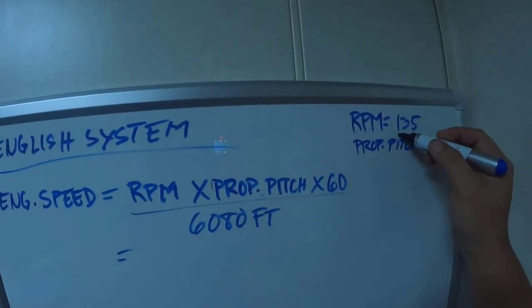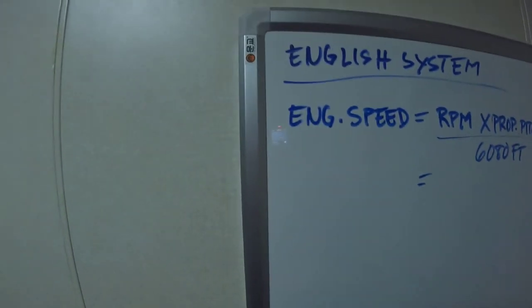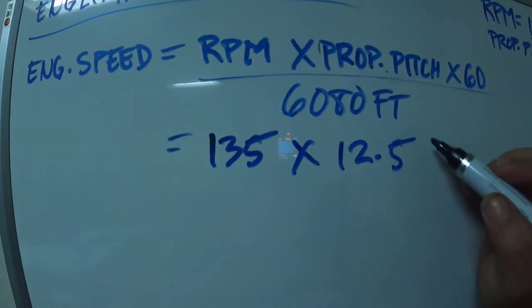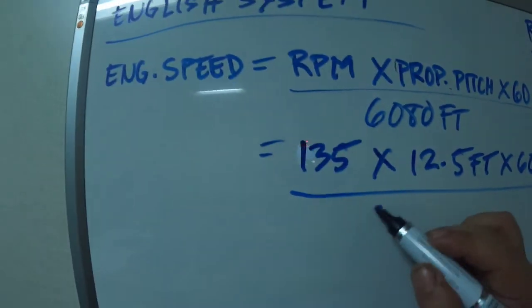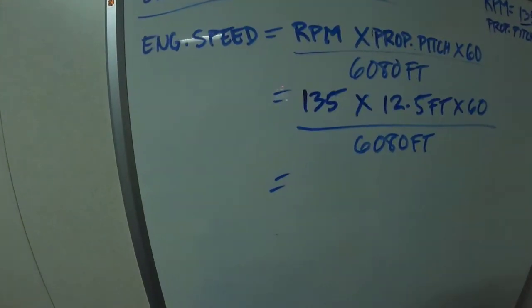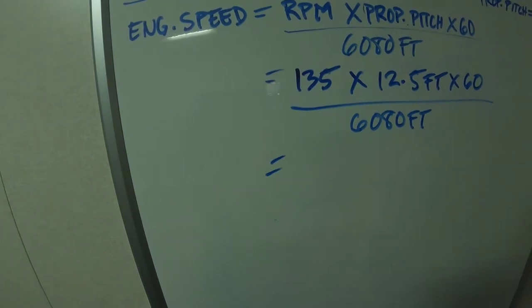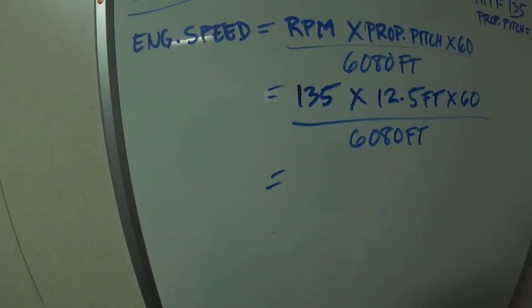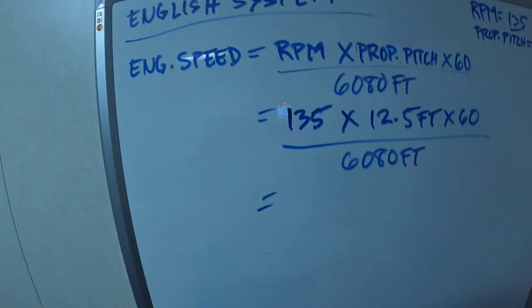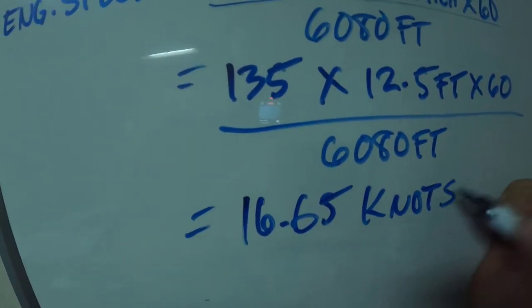Our RPM is 135, then our propeller pitch is 12.5 feet. So we compute using the English system: 135 times 12.5 feet times 60 divided by 6080 feet equals 16.65 knots.